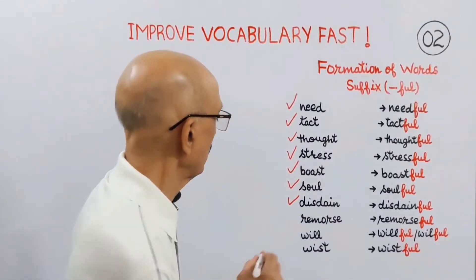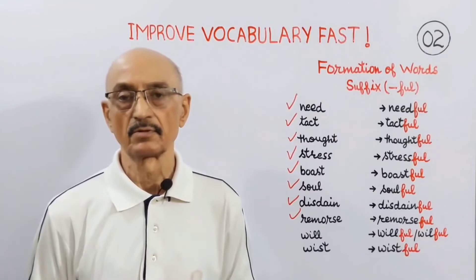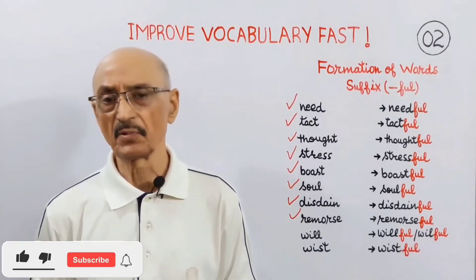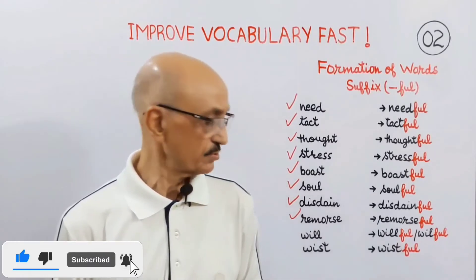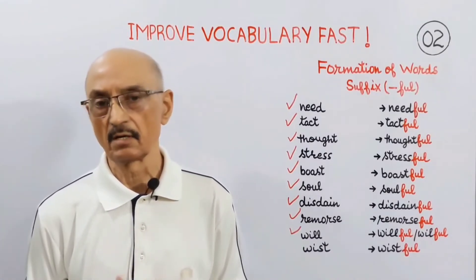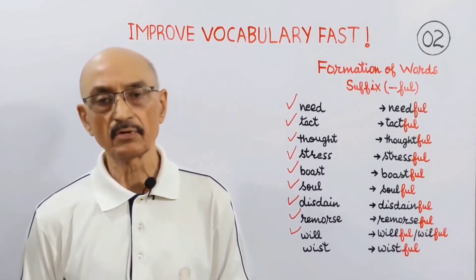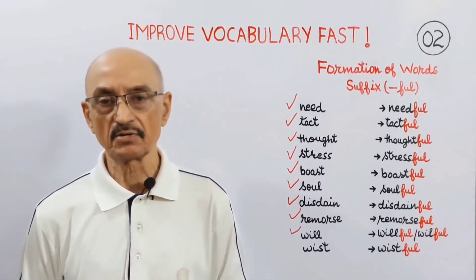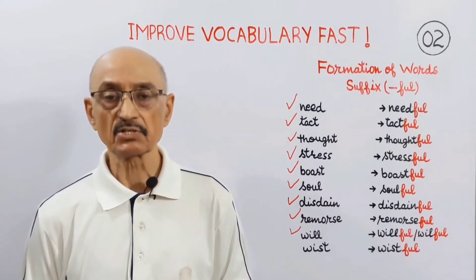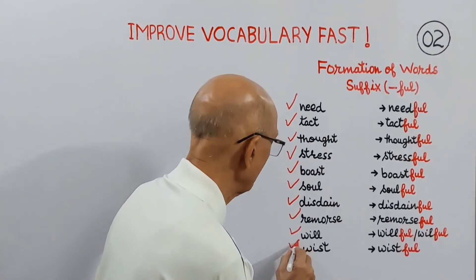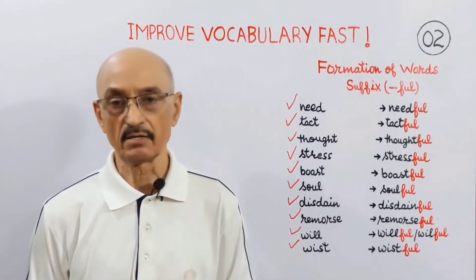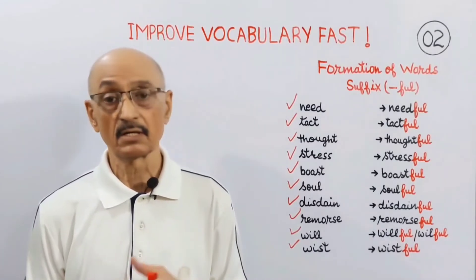Next comes 'remorse'. When we add suffix 'full' to it, it changes into its adjective 'remorseful', meaning showing open dislike. Next comes 'will' — when we add suffix 'full' to it, it changes into its adjective 'willful', meaning adamant, obstinate, rigid. Next comes 'wishful', meaning showing a strong desire with a touch of melancholy or sadness.